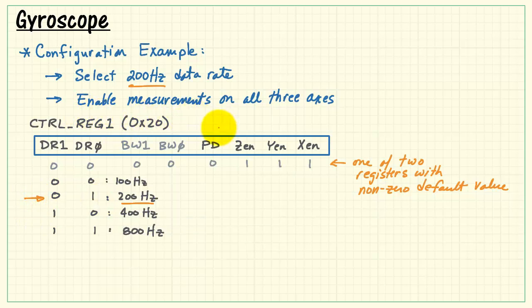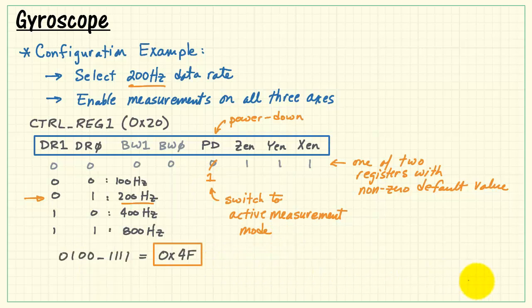We want to enable measurements on all three axes. PD stands for the power down bit, and we need to set this to a 1 to switch to active measurement mode. Altogether, this looks like hexadecimal 4F.